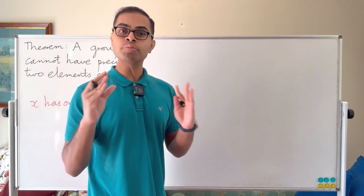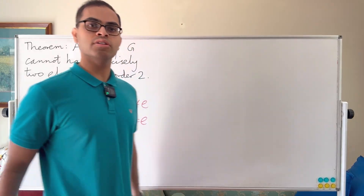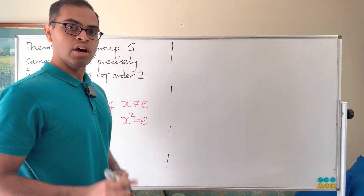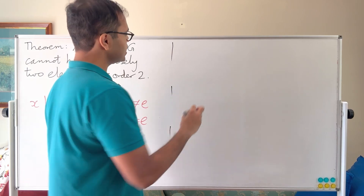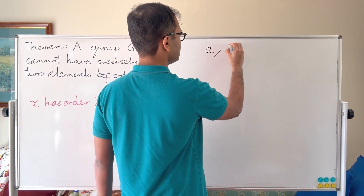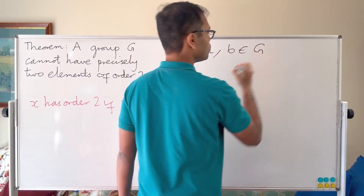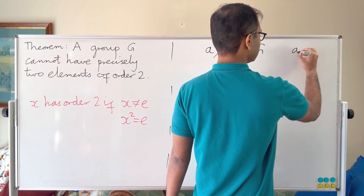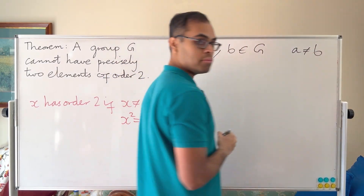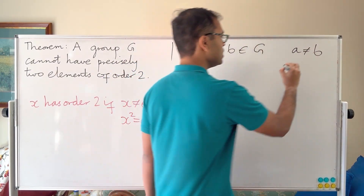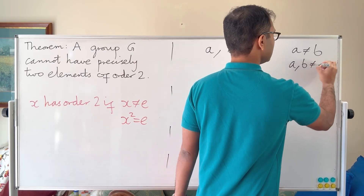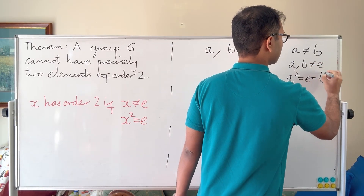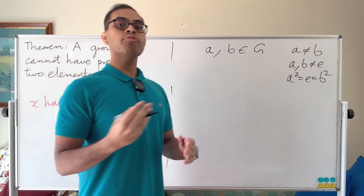This is a very fun exercise. I'm a professional mathematician and I do research in group theory, so let's get started. Let's start with two elements a and b in G and assume they both have order 2. So a is not equal to b, neither is the identity, but a squared equals the identity, and that equals b squared.